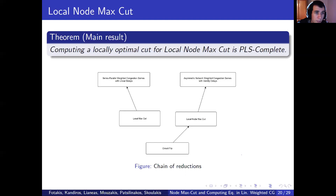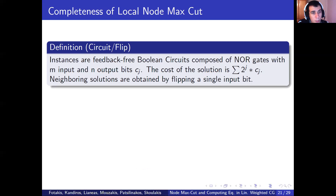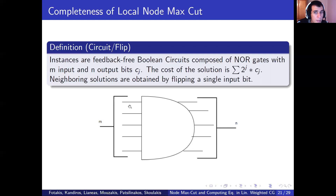Reducing from local max-cut to local node max-cut would not be appropriate, since we cannot embed local max-cut in local node max-cut. Circuit flip was one of the first problems shown to be PLS-complete, by Johnson, Papadimitriou, and Yanakakis. An instance of circuit flip consists of a given feedback-free Boolean circuit composed of NOR gates, with M input bits and N output bits. Possible solutions are the binary inputs to the circuit, while neighboring solutions are obtained by flipping a single input bit each time. The output of the circuit is considered as the value we are trying to optimize. Hence, given such a circuit, we are looking for an input value of bits so that flipping any single bit will not increase the output value, depending on whether we want max or min circuit flip.